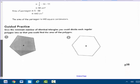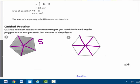Give the minimum number of identical triangles you could divide each regular polygon into so that you could find the area of the polygon. Well, this is a pentagon, number one. So if you draw from the center to the vertices, you would get five. Number two, that shape is a hexagon. A hexagon is a regular hexagon with equal angles and equal sides. So this would have six of the same triangle inside of it.